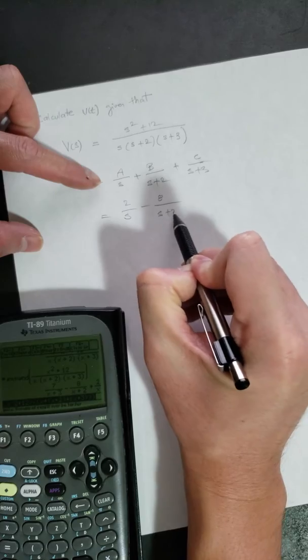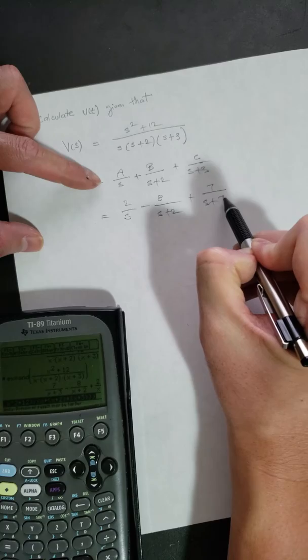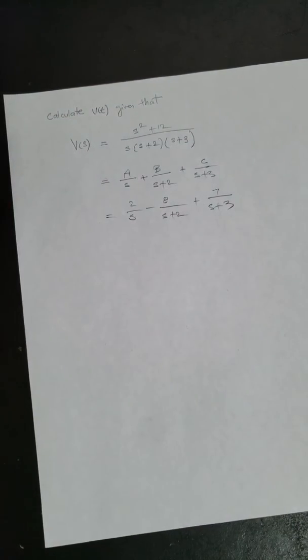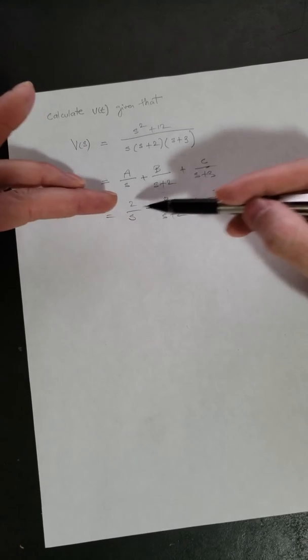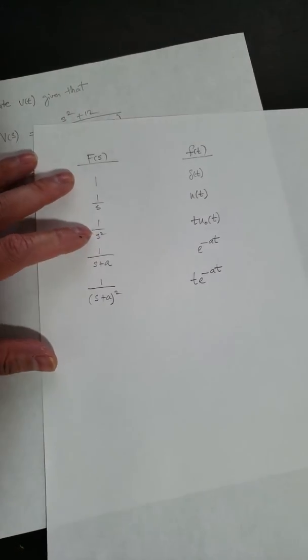C is 7 over s plus 3. Okay, so let's skip all the algebra work, the boring stuff. Okay, so here is your partial fraction that you want.